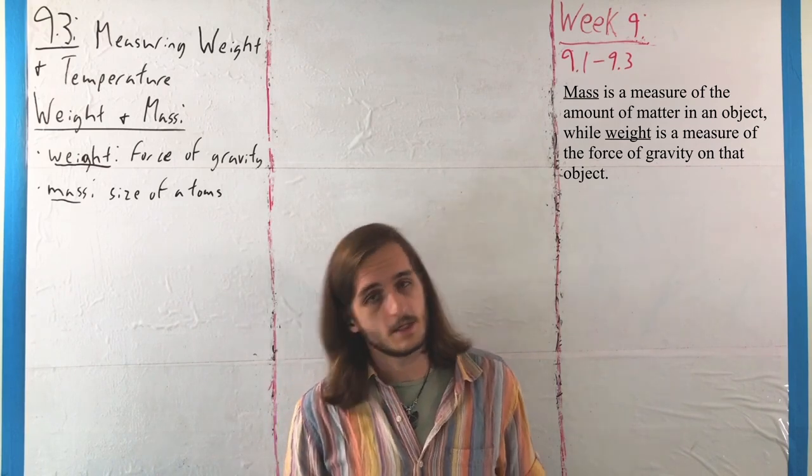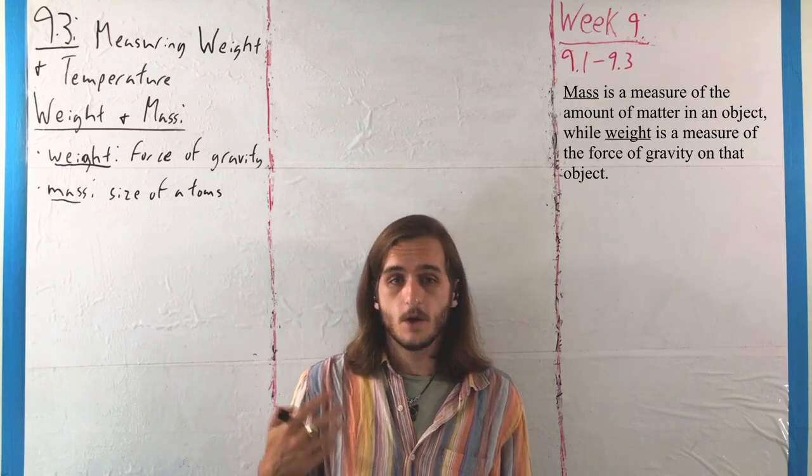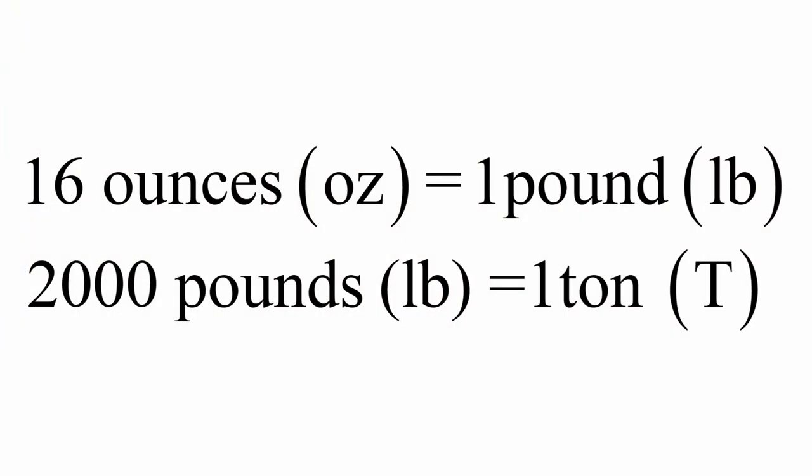But, for our purposes, we're going to focus on things without getting too deep into that philosophy, where in the English system, we measure weights in terms of ounces, pounds, and tons. Where 16 ounces makes one pound, 2,000 pounds makes one ton.